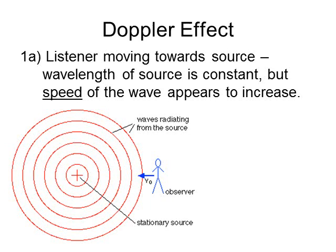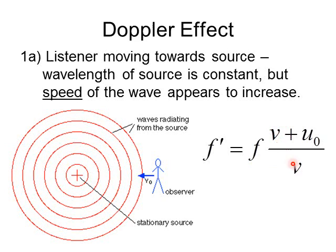For an observer moving toward the source, the observed frequency F-prime equals the original frequency F times the fraction (V plus U-sub-O) divided by V. Here V is the speed of the wave — for sound at room temperature, that's 343 m/s — and U-sub-O is the speed of the observer. Notice the fraction is greater than one because we're adding to the numerator, so the frequency increases, which is what we expect.